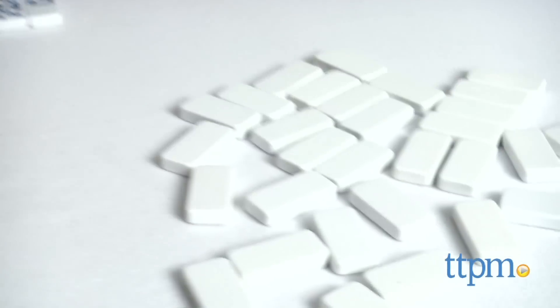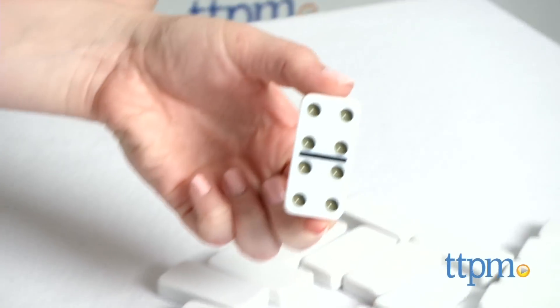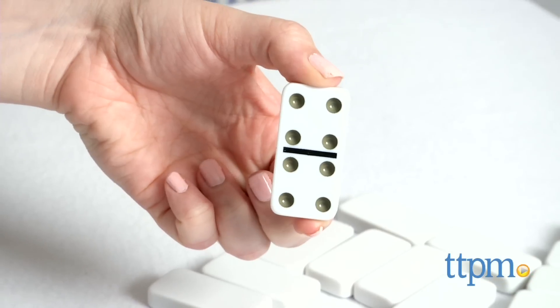If at any time you don't have a matching domino, you can draw one from the extra pile and either play it, or pass your turn if that new domino can't be played.